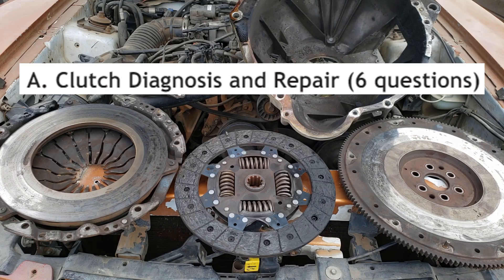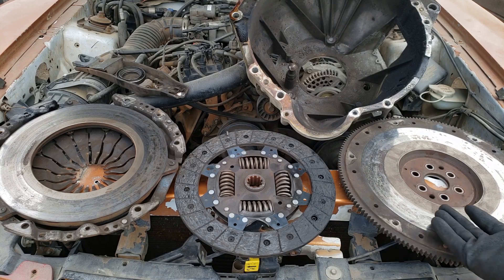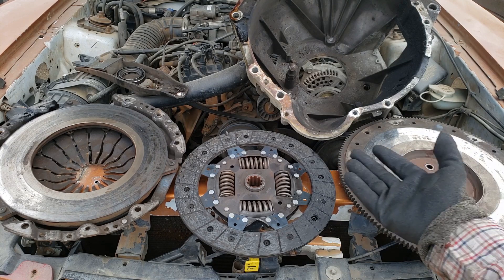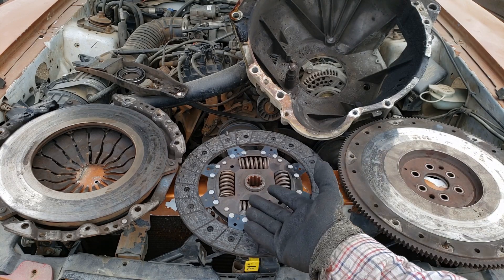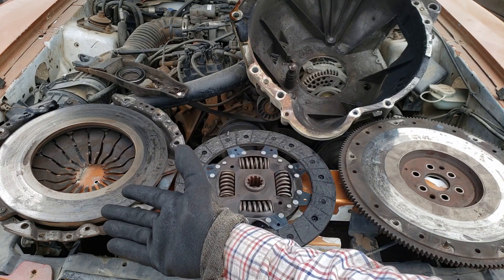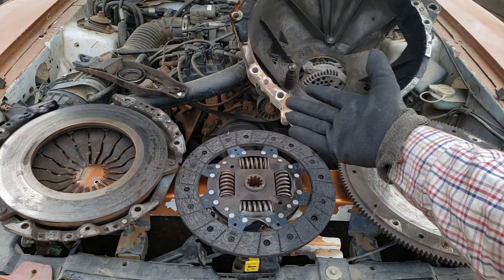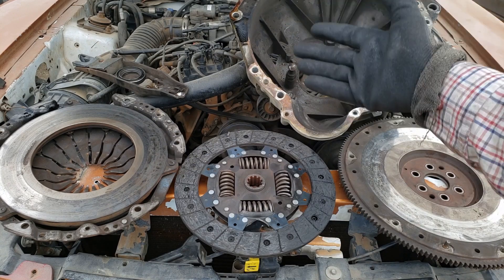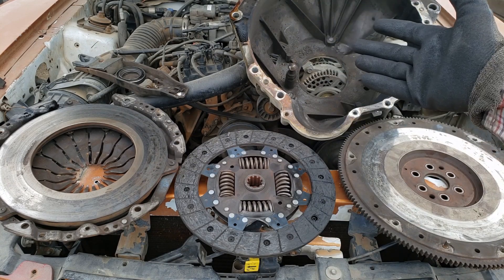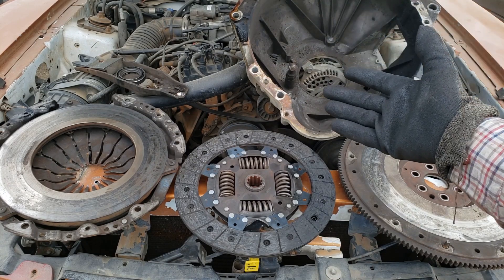The test will have six questions on clutch diagnosis and repair. The main parts are the flywheel, clutch disc, and pressure plate. All these are found inside the clutch housing.